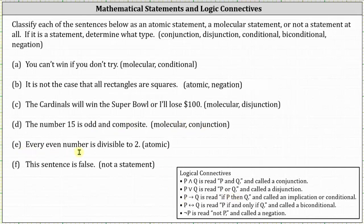E, every even number is divisible by two. This is an atomic statement. This is an atomic statement and it doesn't have a logical connective. And then F, this sentence is false. This cannot be determined true or false and therefore this is not a statement.